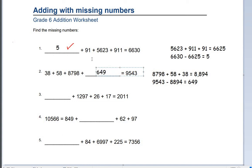Number 3. We need to work out blank plus 1,297 plus 26 plus 17 equals 2,011. So, we work out what 1,297 plus 26 plus 17 equals, and that gives us a total of 1,340. Then we minus that from our 2,011, giving us a total of 671. Very good.